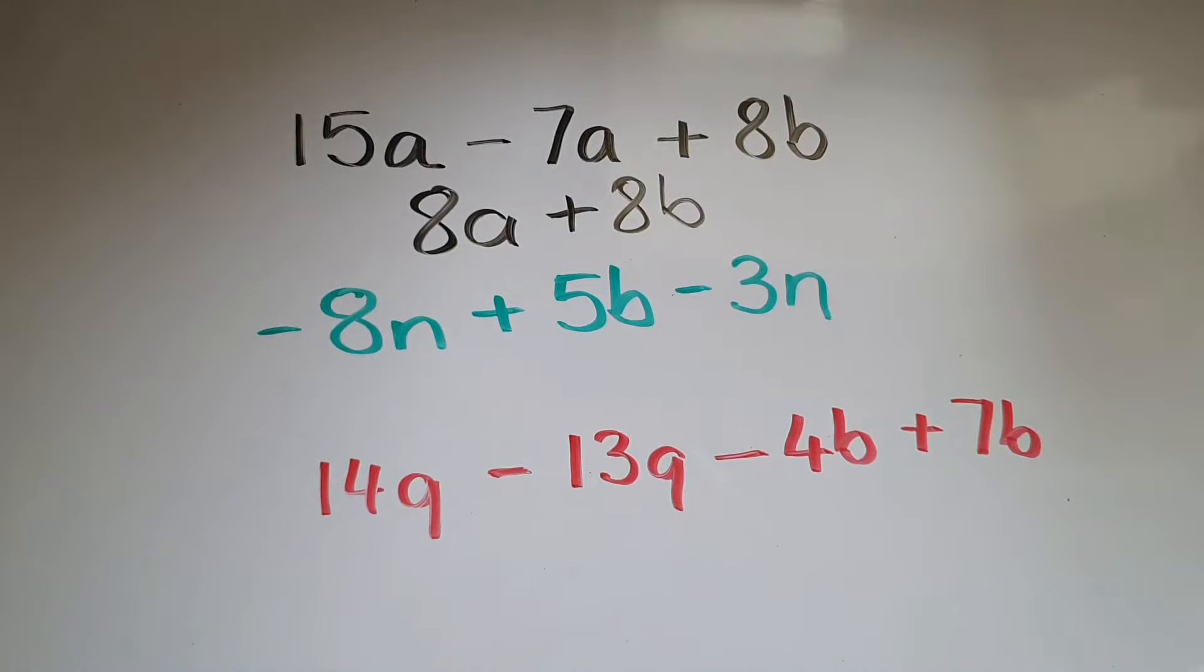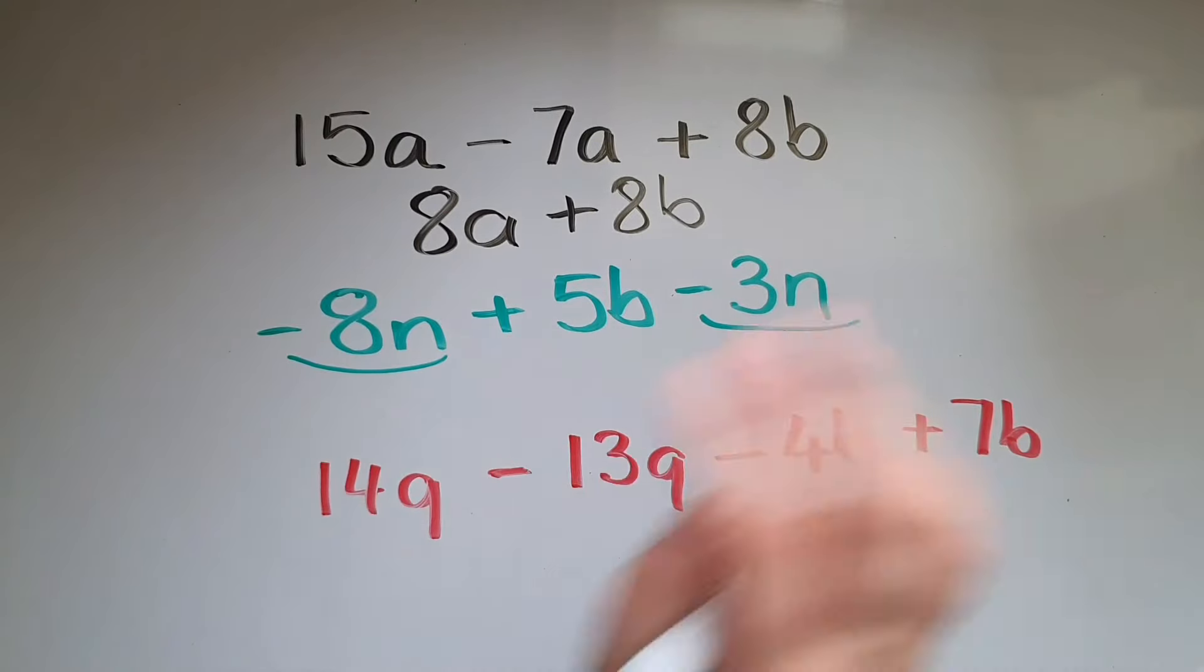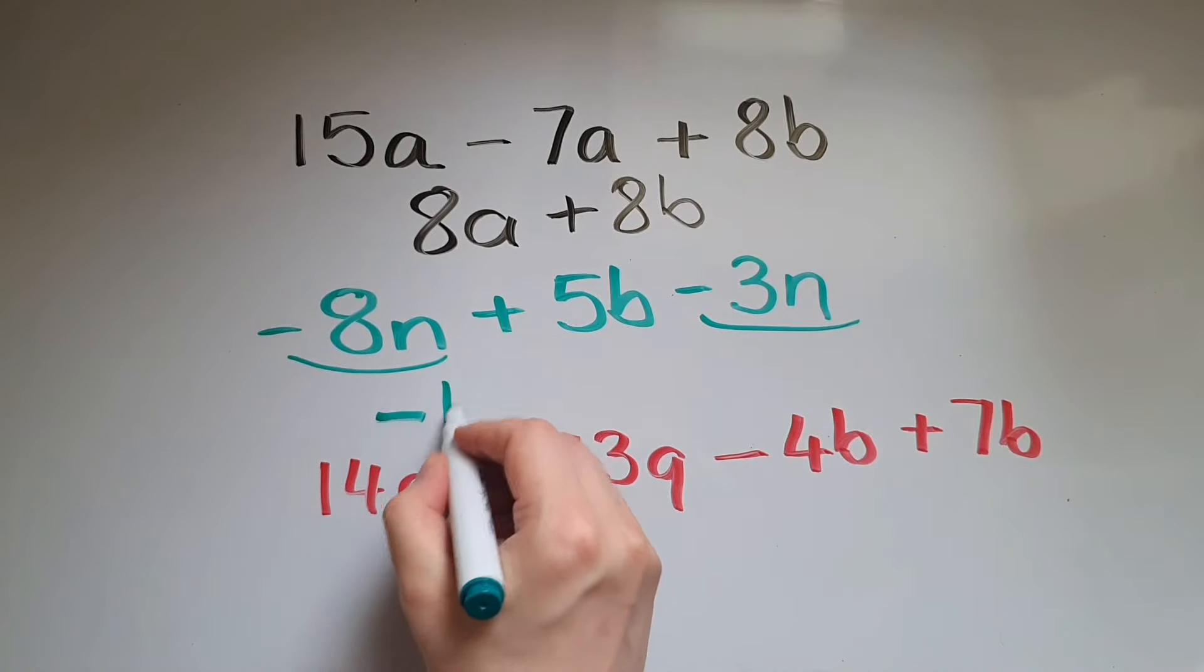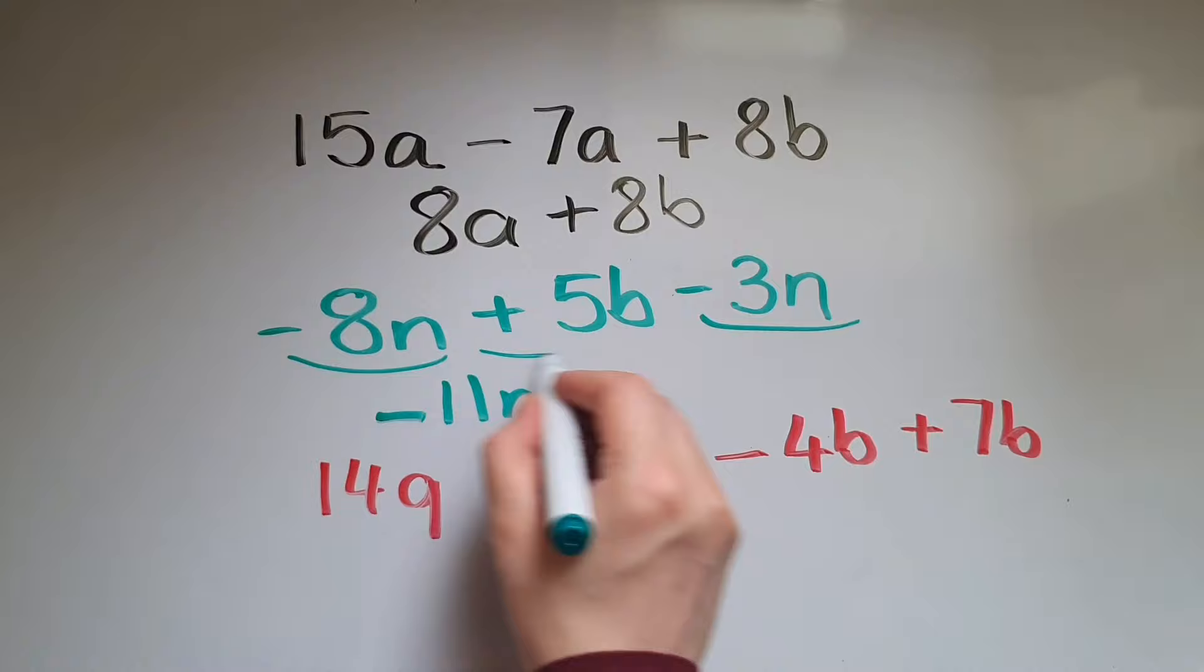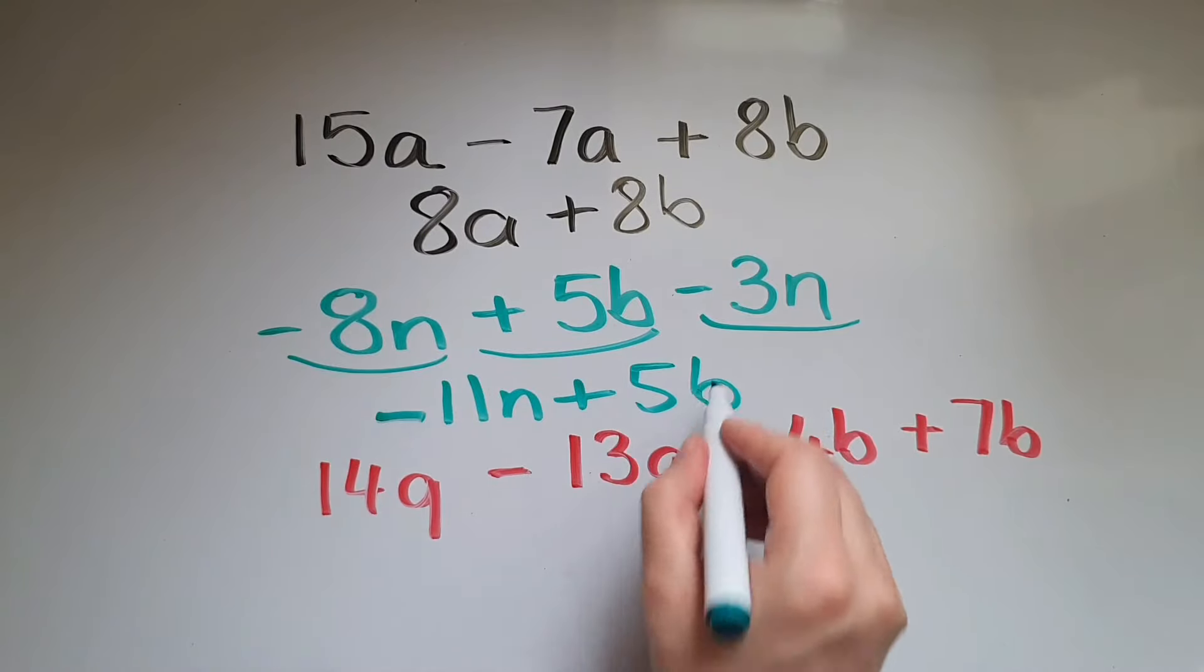Now we've got negative eight n, add five b, take away three n. So looking at the n's together, negative eight n take away three n, that makes negative 11 n. And we've just got that five b, so plus five b.